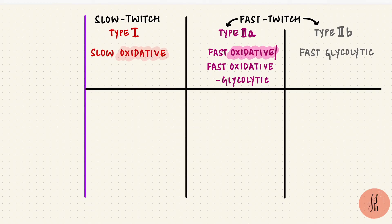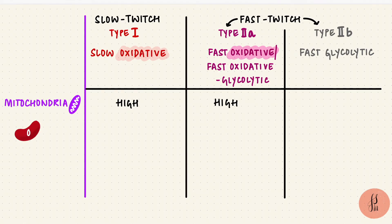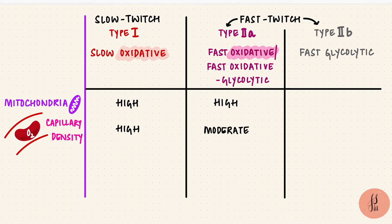Oxidative phosphorylation needs mitochondria, making the slow oxidative fibers rich in mitochondria. The fast oxidative fibers have a lot of mitochondria as well. The oxygen they use comes from red blood cells, which are in capillaries. That's why the slow fibers have a high capillary density, and the fast oxidative fibers have a moderately high capillary density.